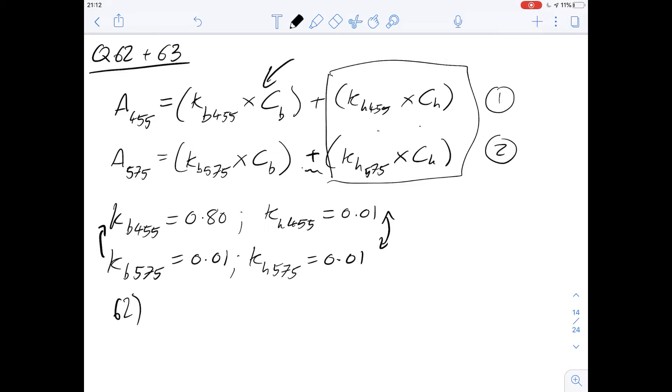So we want to get rid of this side of the equation. And how would we do that? Well, we want to multiply these by zero to make them zero. So in order to make them equal, we want to set C_B equal to zero. The reason that these two are the same is because H_455 is the same as H_575, and they're both being multiplied by the same constant.